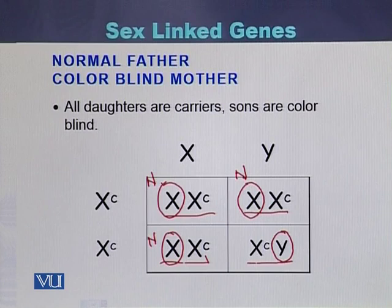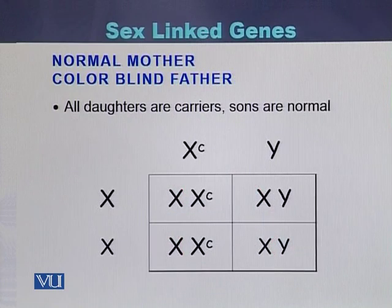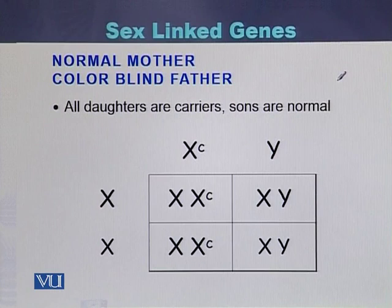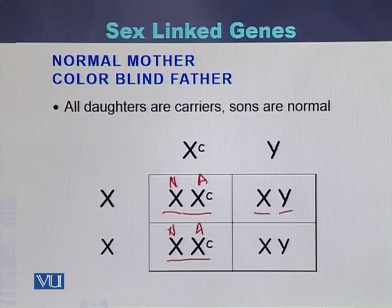In the case where the mother is normal and the father is color blind, all daughters will be carriers and sons will be normal. Each daughter has one normal allele and one affected allele on their two X chromosomes. In case of sons, they have one X chromosome and one Y chromosome, and there is no affected allele, so the sons will be normal.